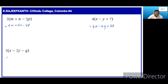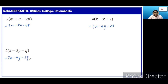The next one: 2 into x minus 2y minus q. So, 2 into x is 2x. Minus, 2 into 2y is 4y. Minus, 2 into q is 2q.